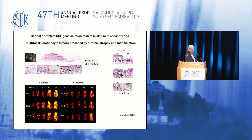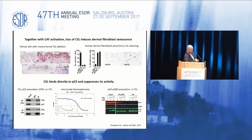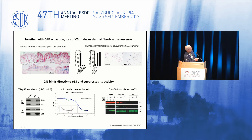A few years ago, we showed that mesenchymal deletion of the CSL gene in mice results in multifocal keratinocyte tumors that are preceded by stromal atrophy and inflammation. Using an imaging system also used in the clinic, we can visualize these multifocal lesions developing over time, and they can be suppressed by anti-inflammatory agents. At the same time, suppression of CSL in mouse or human fibroblasts also induces senescence — an early step in this sequence of events.